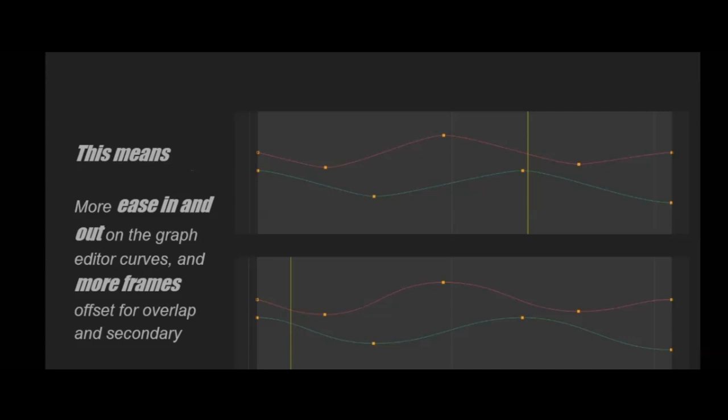Here's a very basic visualization of this concept: anything small can turn a lot faster and accelerate and decelerate much faster. Anything big would have a lot of ease on the curves. This isn't completely accurate, but it gives you a general ballpark idea.